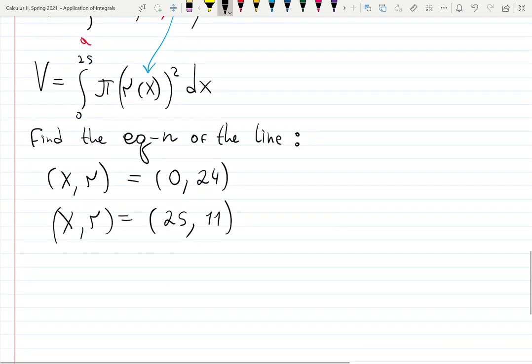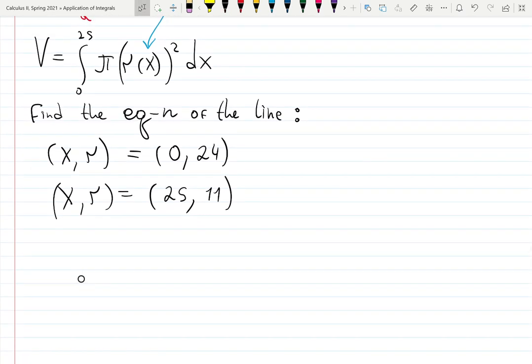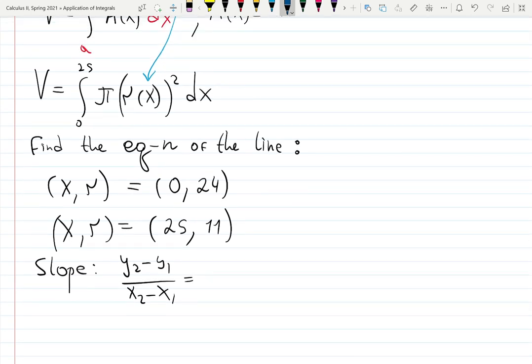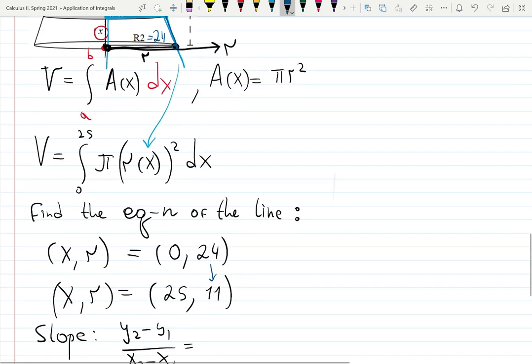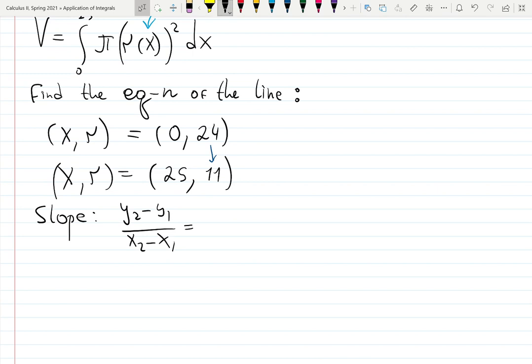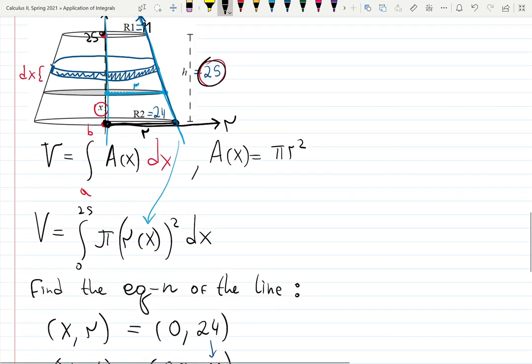This is enough information to build the equation of the line through two points. First we're going to find the slope. The slope has formula y2 minus y1 over x2 minus x1. The radius is decreasing, so we will expect the slope to be negative. 11 minus 24 over 25 minus 0 equals minus 13 over 25. That's true because the line decreases.